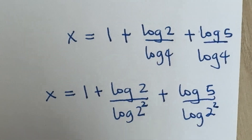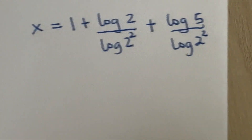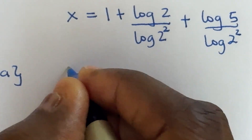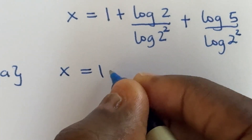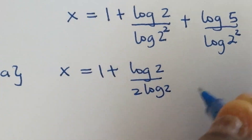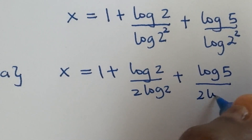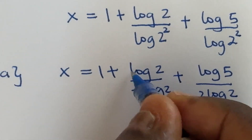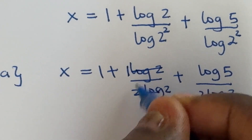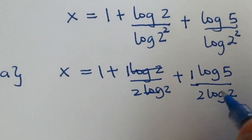We apply the law we used earlier to transfer the power to the back in both cases, so that x gives us 1 plus log 2 over 2 log 2, then plus log 5 over 2 log 2. So log 2 divided by 2 log 2 — this cancels — and we are left with one half here. And this is the same thing as 1 over 2 times log 5 divided by log 2.